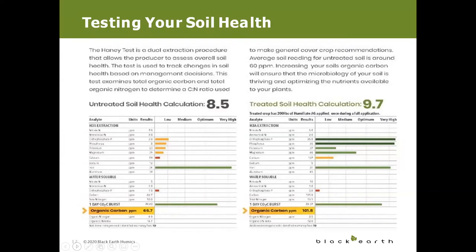When we talk about soil testing, this test is used to show the changes in soil based on management decisions. A fall application of 200 pounds per acre of Black Earth Humalite AG has resulted in moving the needle on their soil health calculation from 8.5 to 9.7. Tracking the biological activity of your soil over time indicates the availability of plant nutrients in your soil. The Haney test goes beyond other soil tests and tells you how biologically active, or how alive, your soil is.